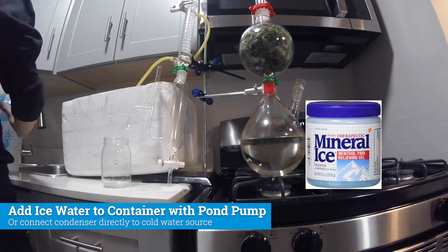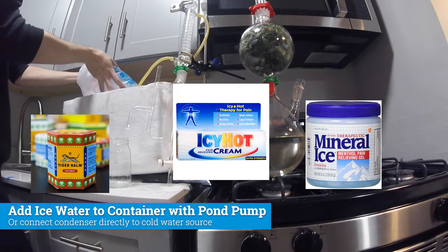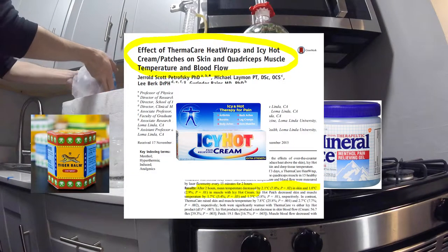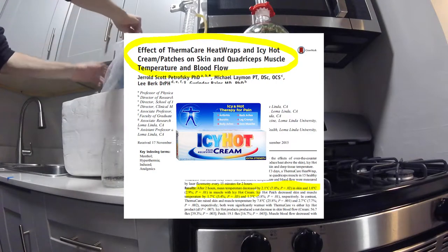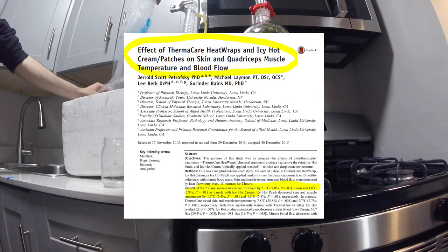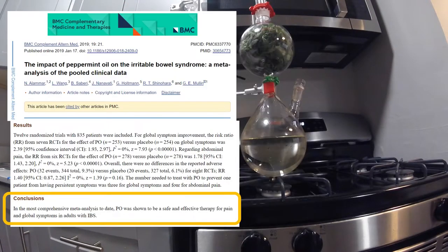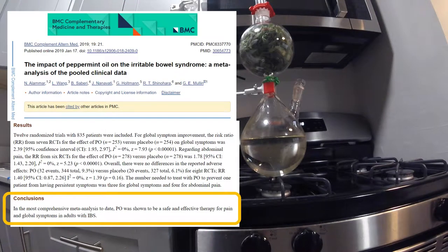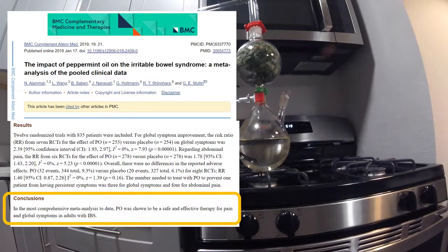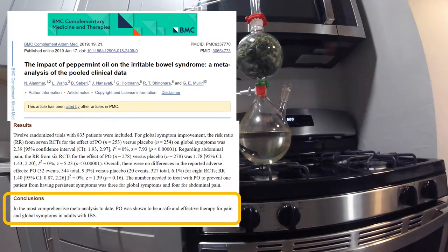Many topical pain ointments contain menthol as an active ingredient. Icy Hot, in particular, has been shown to decrease skin and muscle temperature when applied. Other common products with menthol include throat lozenges, congestion relievers, and mouthwash. One meta-analysis found that peppermint oil, which contains mostly menthol, is effective at relieving symptoms of irritable bowel syndrome.